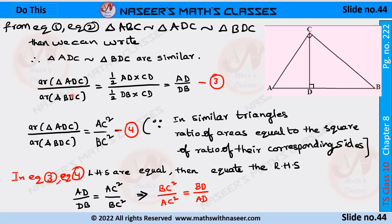We know that the area of triangle ADC is written as half times base times height, where base is AD and height is CD. And the area of triangle BDC is written as half times base times height, where base is DB and height is CD.